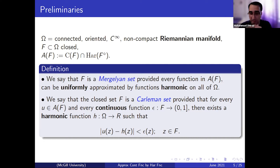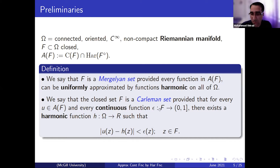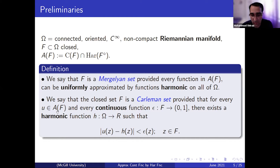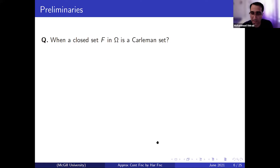In another direction, we have the Carleman set. The Carleman set deals with approximation controlled by a function — the error function — still defined on F. We call a set a Carleman set if, for every function in A(F) and every continuous error function, there is a harmonic function such that the difference between the continuous function and the harmonic function is controlled by ε on F.